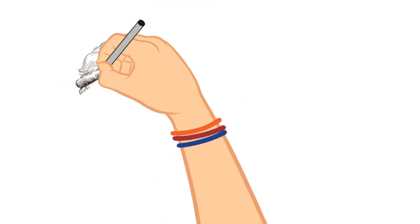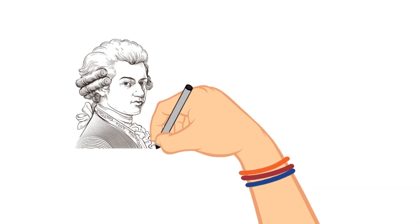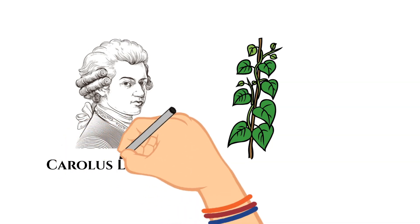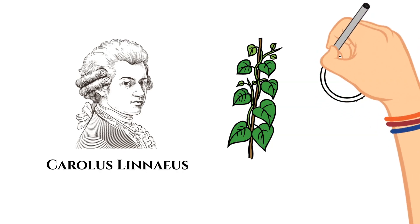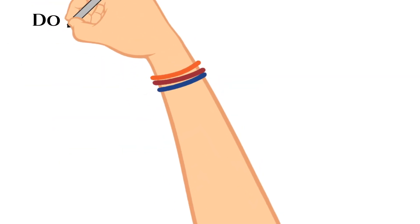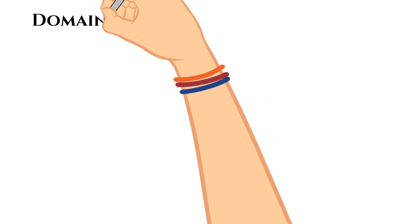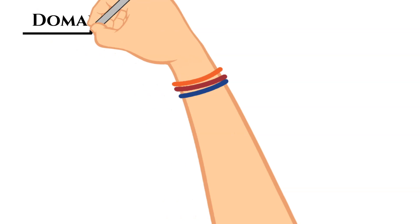Although this classification system has been tailored, changed, and improved upon, Carlos Linnaeus, a Swedish plant scientist, is the man credited with inventing it. We'll dive into the domains and kingdoms of living things, and then pick a few different animals to classify as examples.